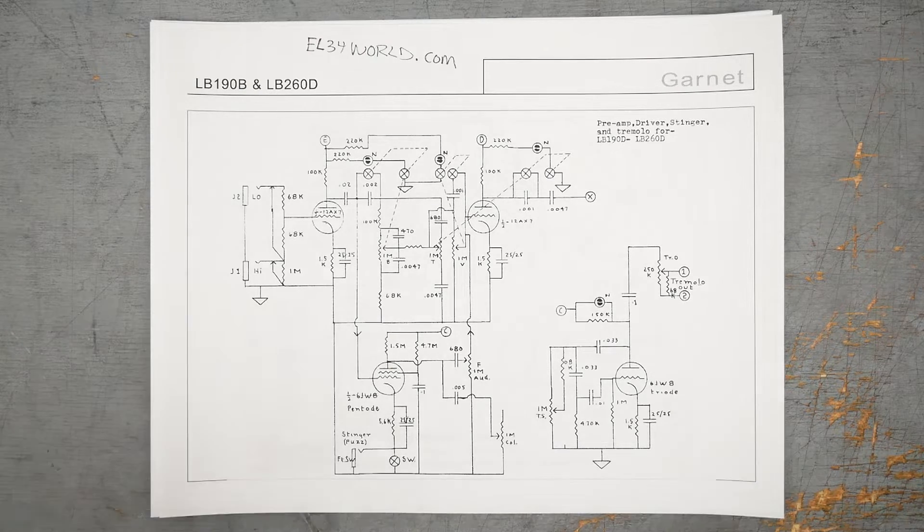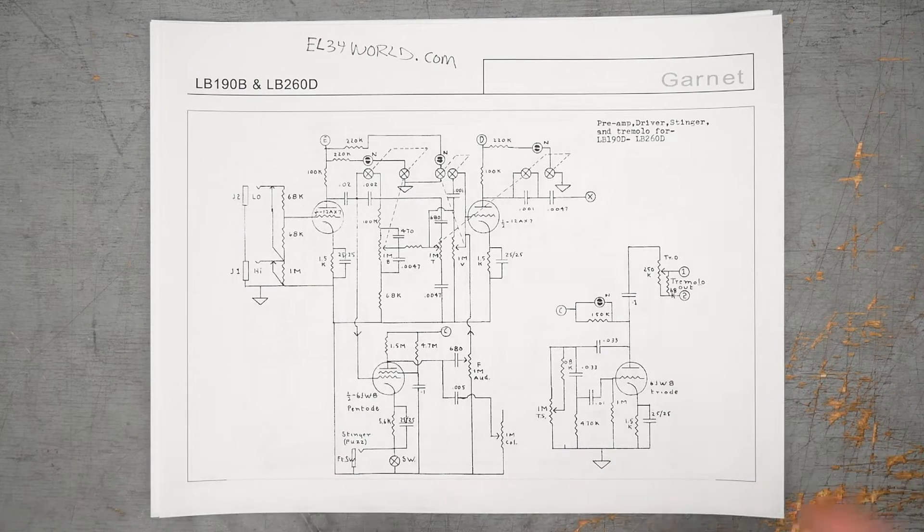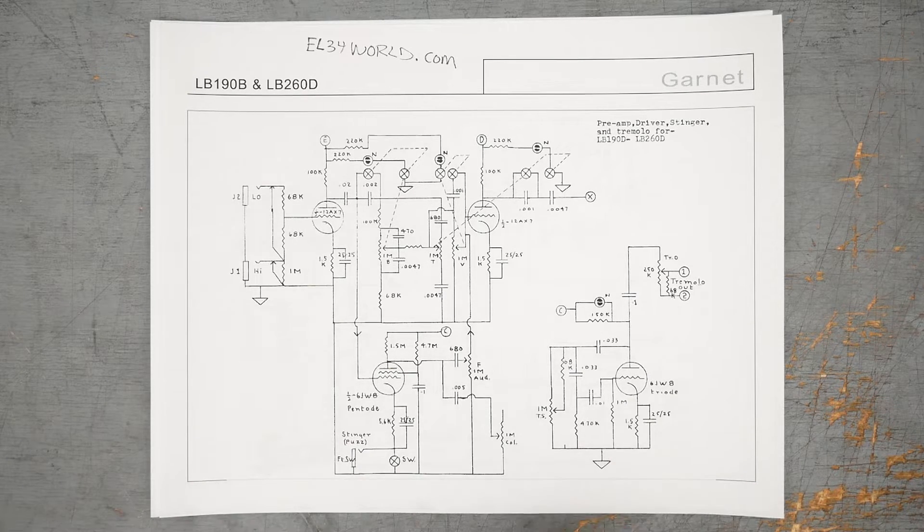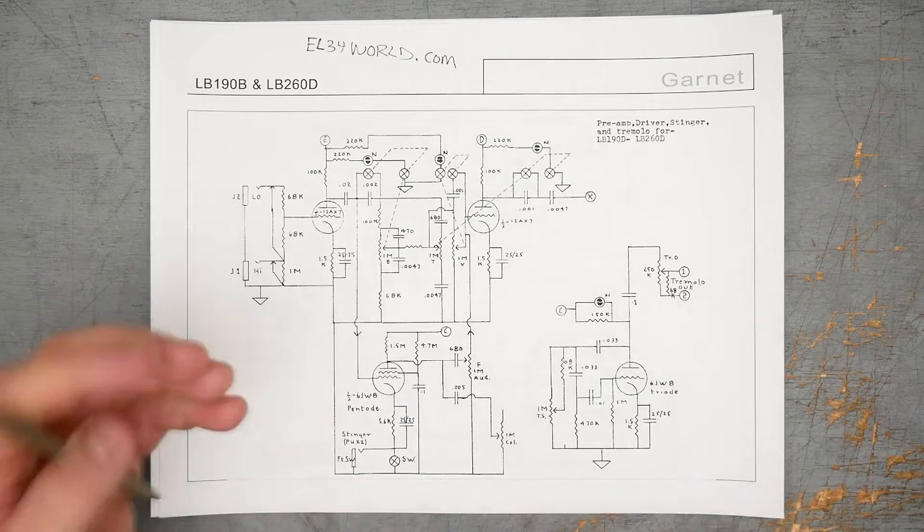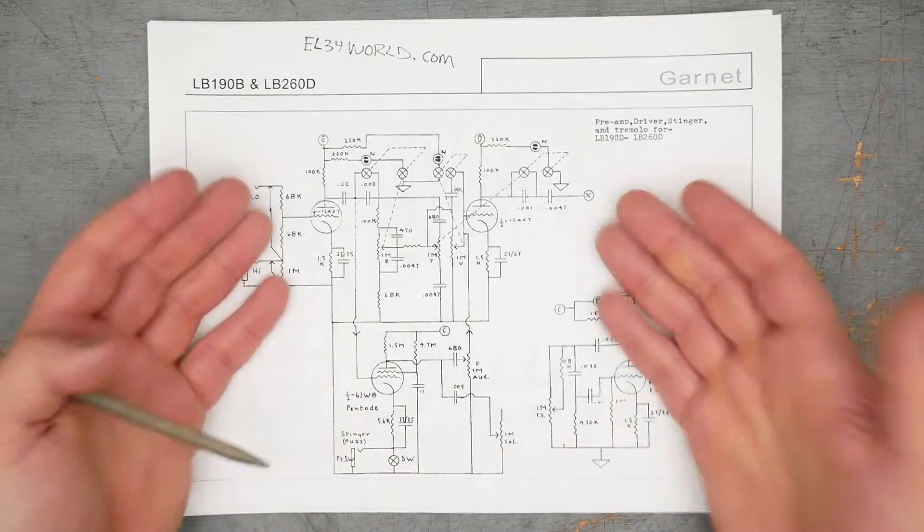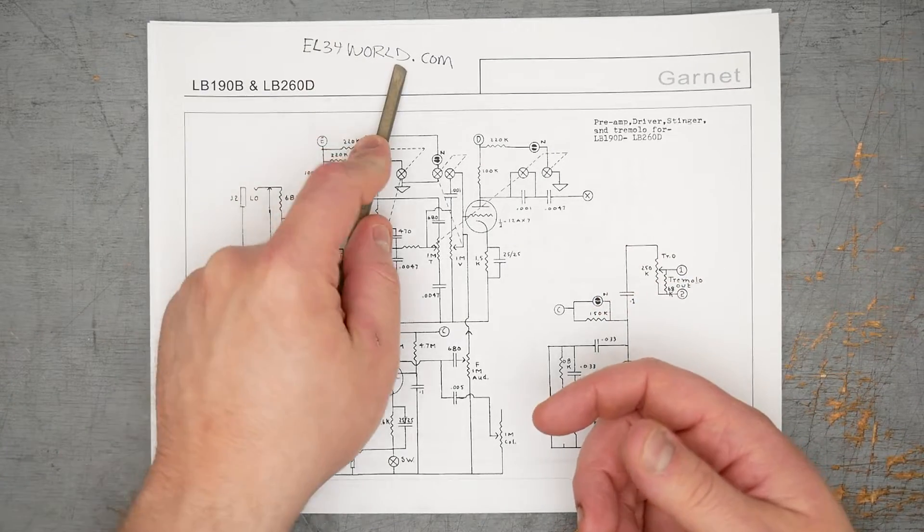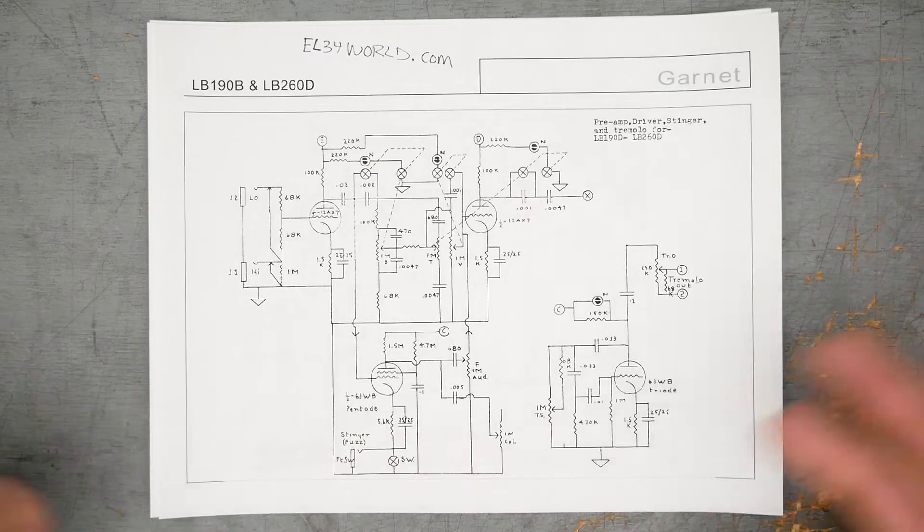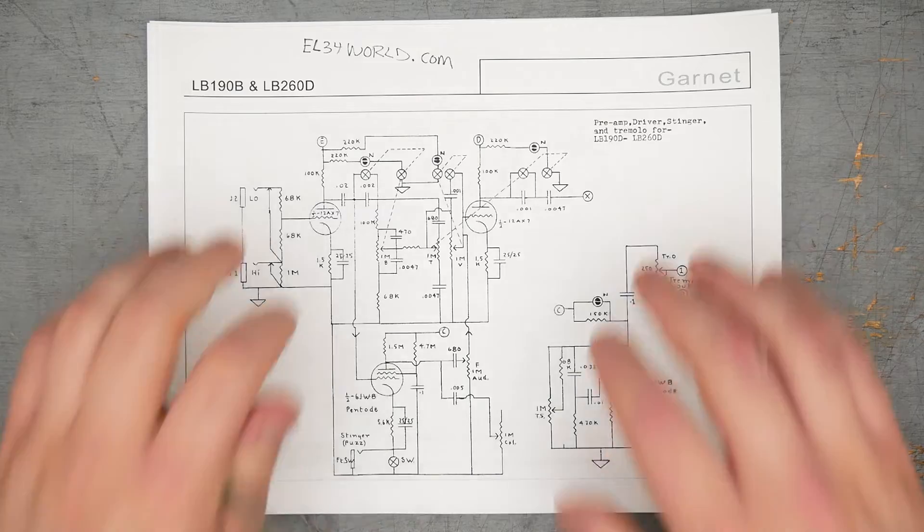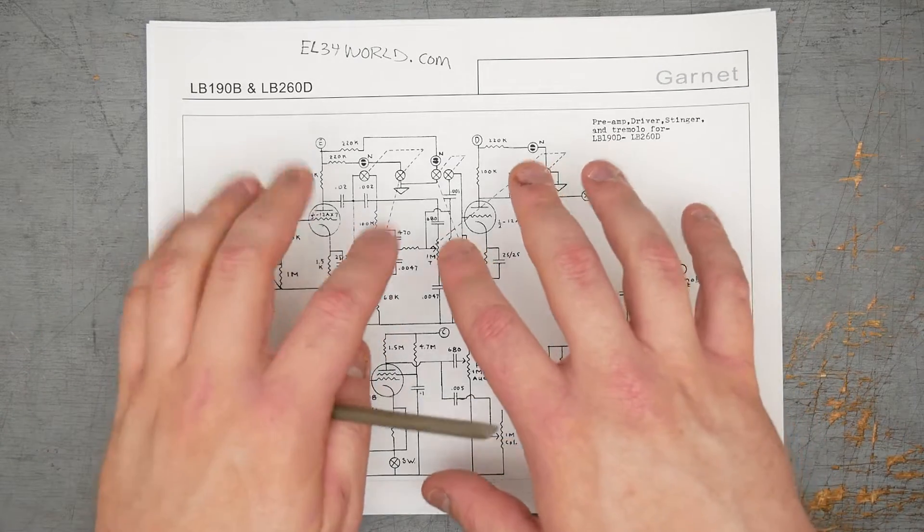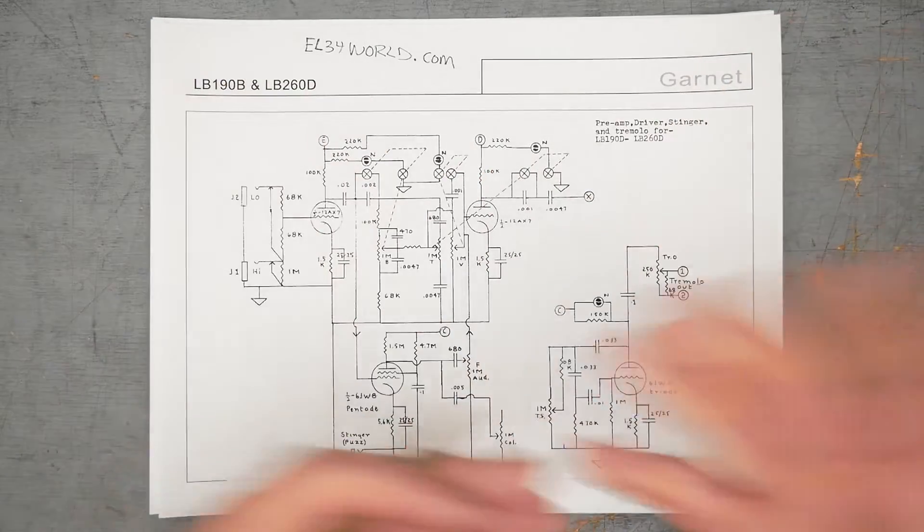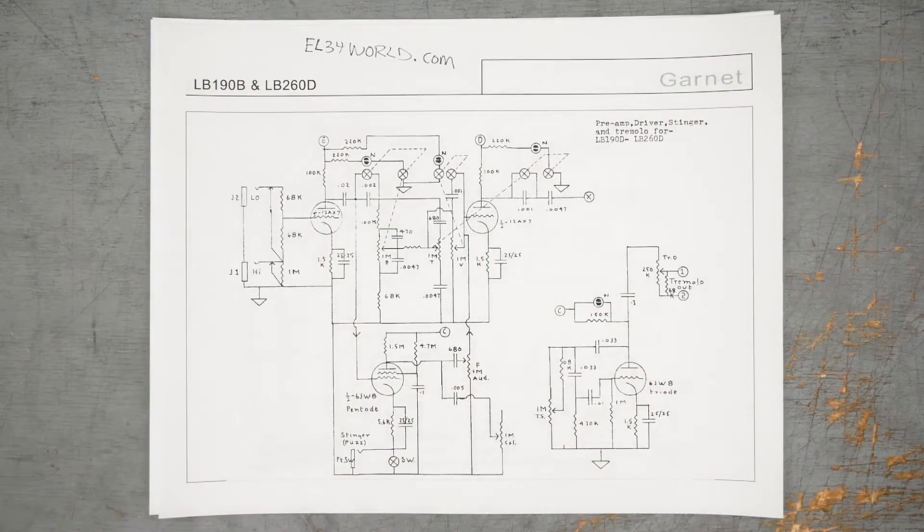The original owner of Garnet amps, his name was Gar Gillies. Gar has unfortunately passed away. I think it's his son now that runs the website and still prints and sells the book. When I picked up that PA head I was looking through the schematics. All these schematics are from el34world.com. They have a huge schematic library. That's the repository for the schematics, so thank you to both those groups of people.